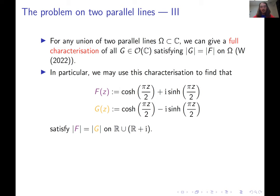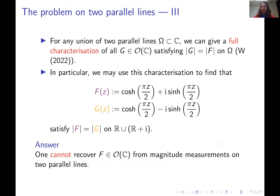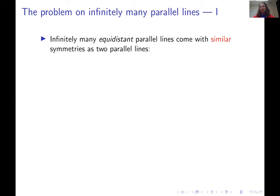This example answers the question I had, because it tells us it is impossible to recover an entire function from magnitude measurements on just two parallel lines. This was bad news at the time, but in the long run turned out to be quite interesting. If you start adding more and more lines, all at the same distance apart as the first two, you're not really introducing any more symmetries — so infinitely many equidistant parallel lines come with similar symmetries as two parallel lines.